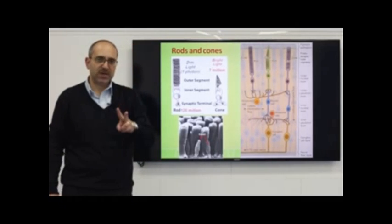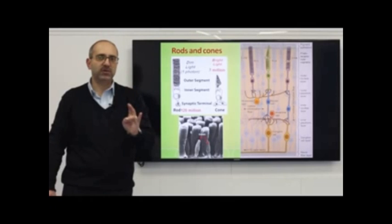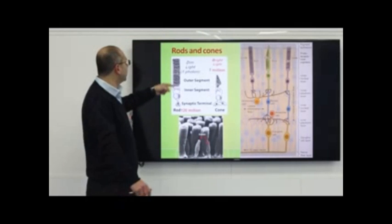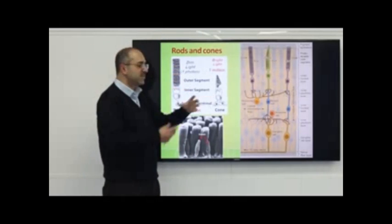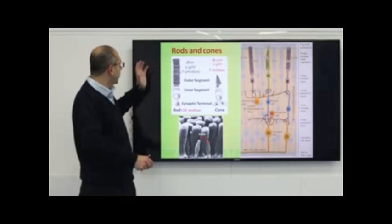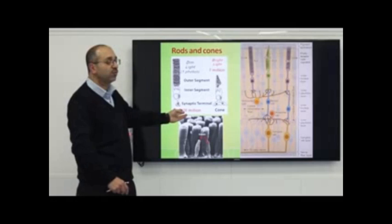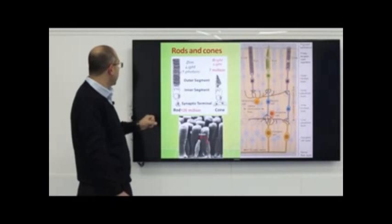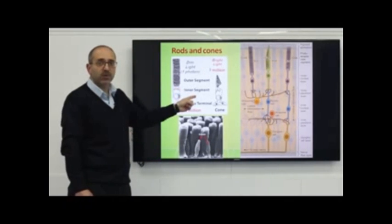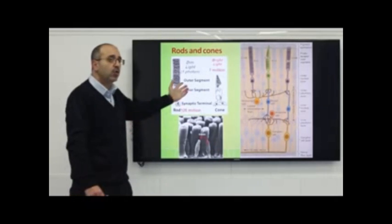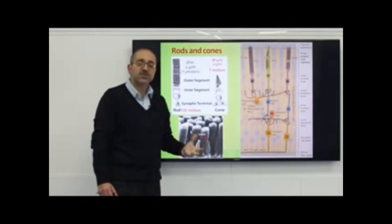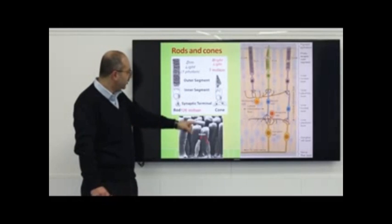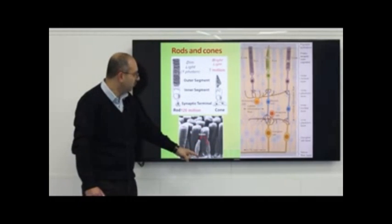The cells that help us see come in two types: rod cells and cone cells, named for the way they look. Rod cells are slim and elongated; cone cells look like cones. There are more rod cells — 120 million in our retina — compared to 7 million cone cells. Rod cells are responsible for vision in the dark, while cone cells are responsible for vision in light and color vision.